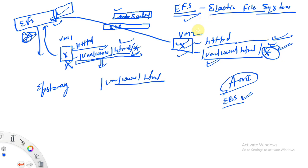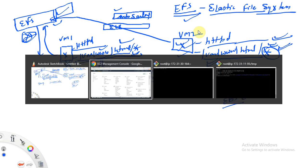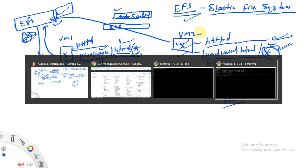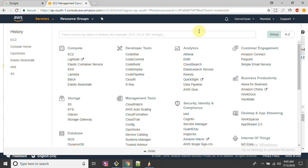So how do we create this? Before beginning the practical, I'd like you to like, share, and subscribe to my channel and press the bell icon to be notified for upcoming videos. For this video I have already created two machines. I will create one common mount point and mount the EFS, then show you that if I create a file on one server, it will be available on another server automatically - because this works like NFS.